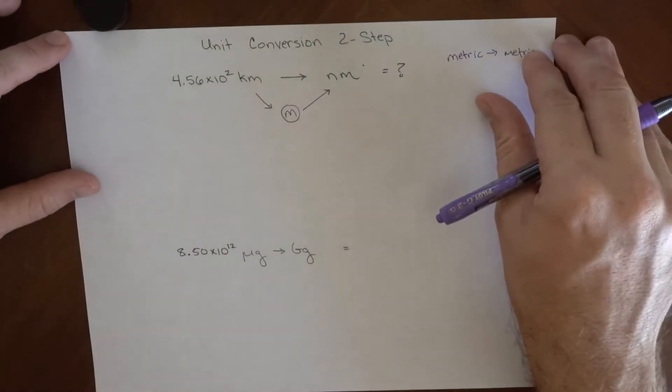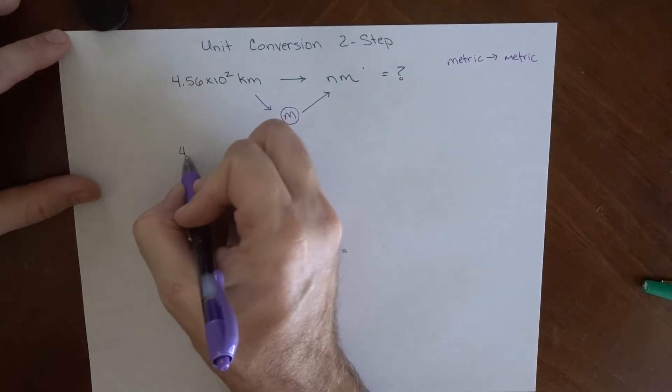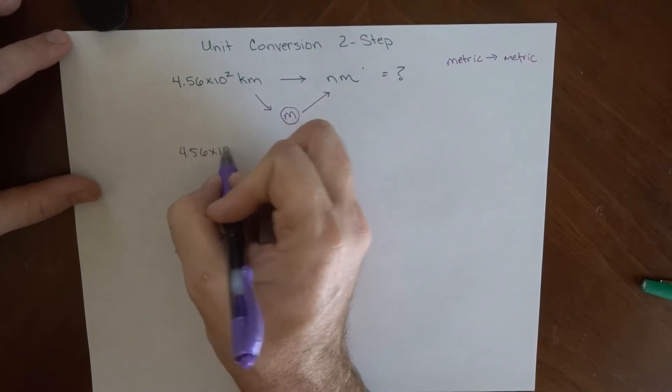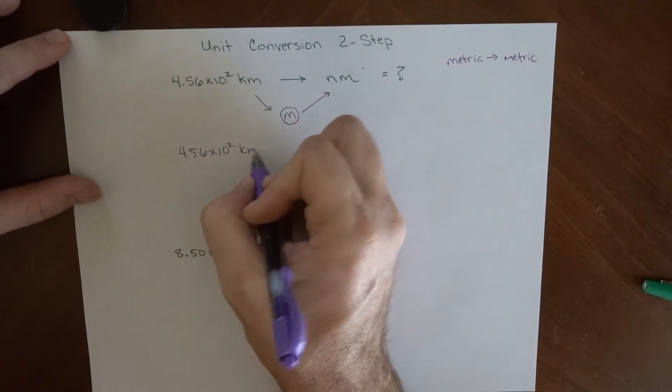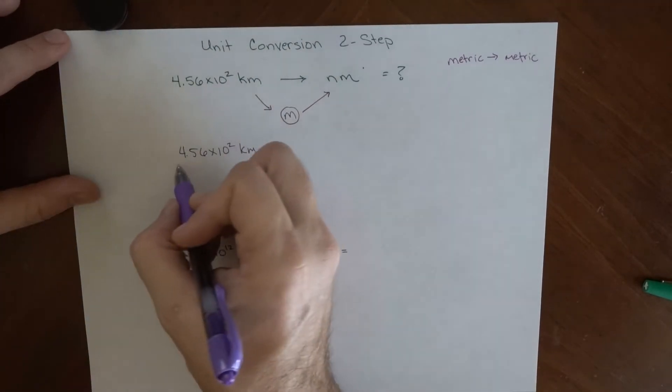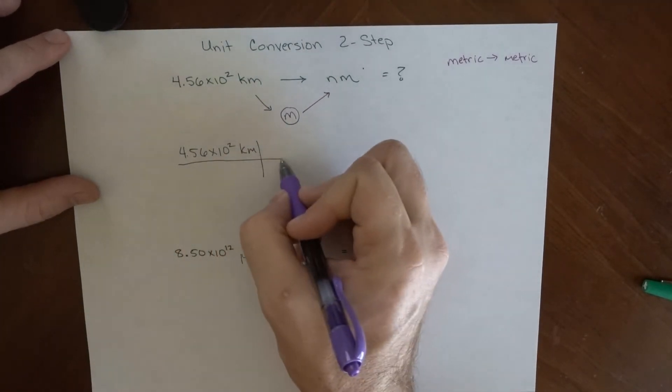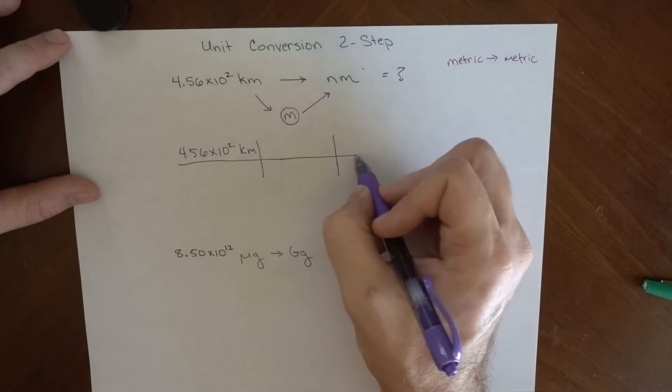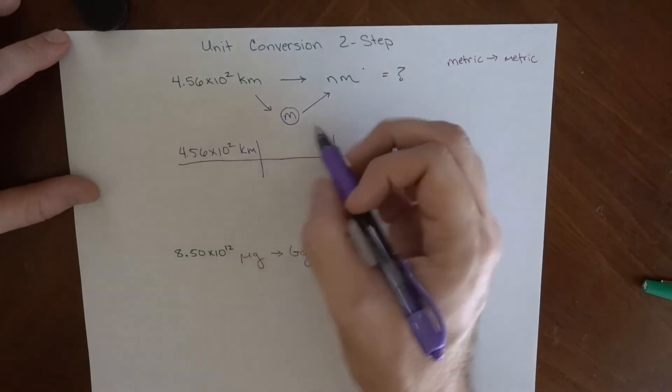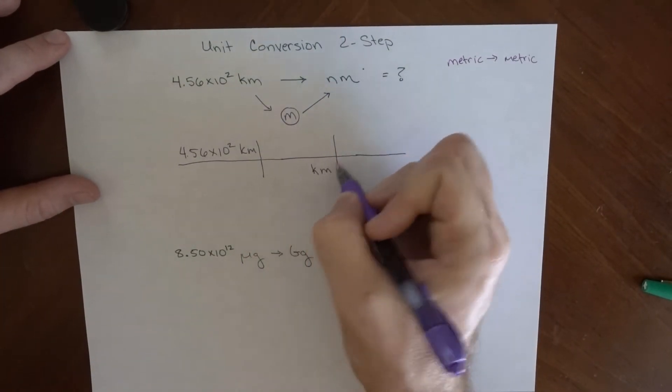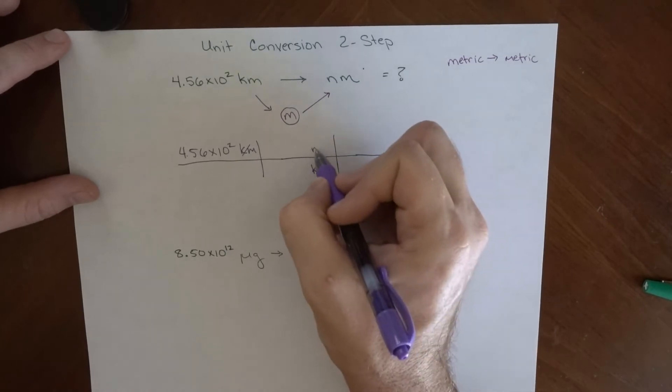So let's see how we end up laying that out. So 4.56 times 10 to the second kilometers. And what I'm going to do here is something that I frequently do, which is I'm going to let the units do the work, and then I'll put in the numbers. So I know I want to get away from units of kilometers, so I'm going to put those on the bottom so they cancel, and get units of meters.